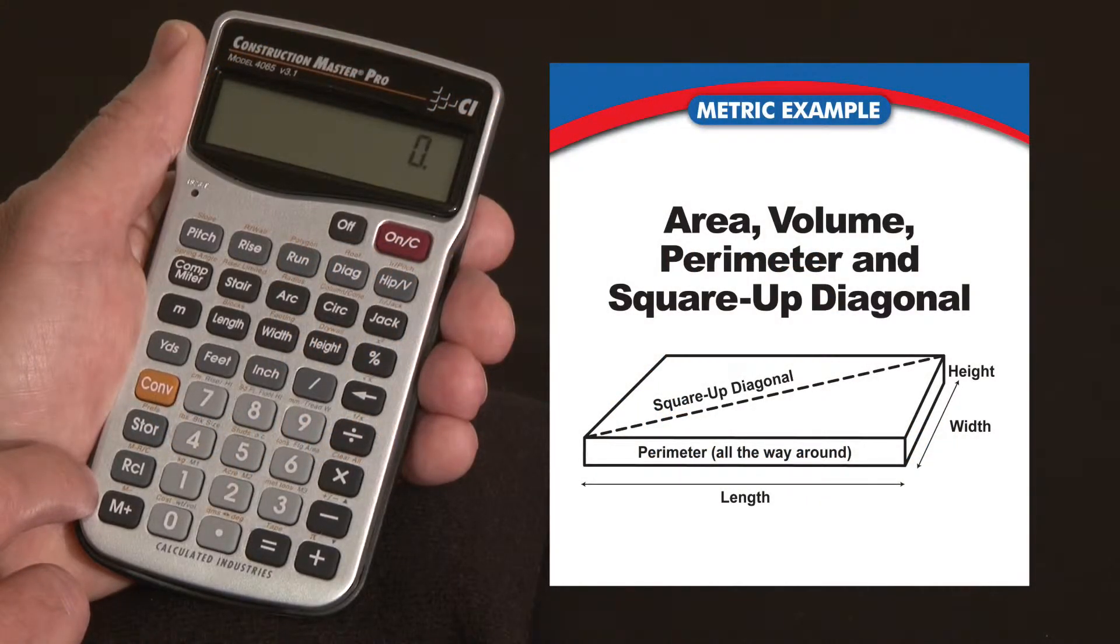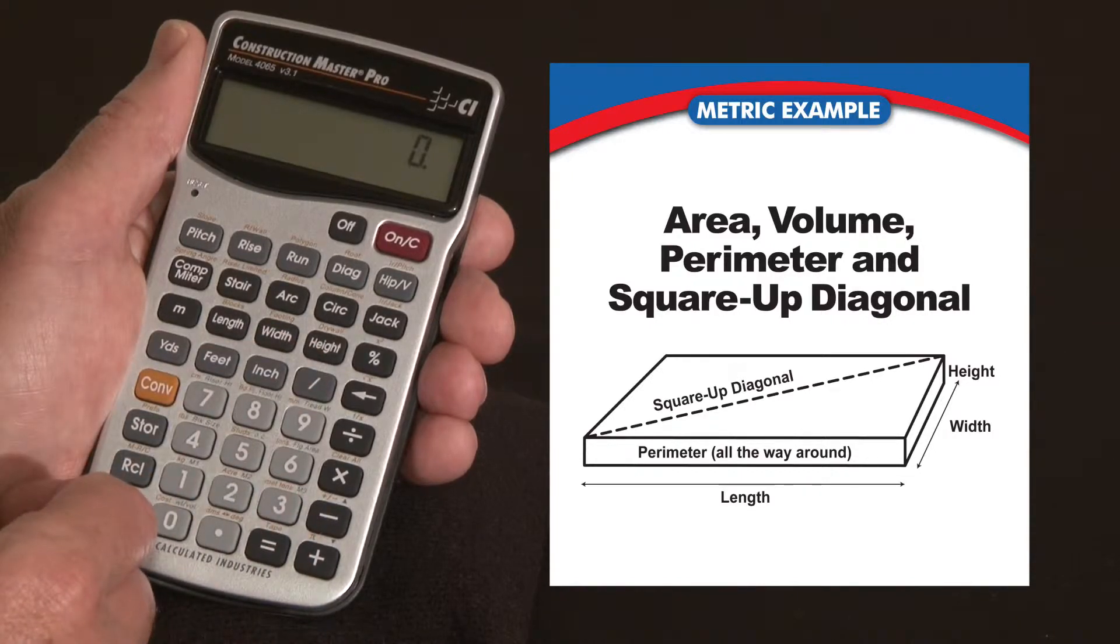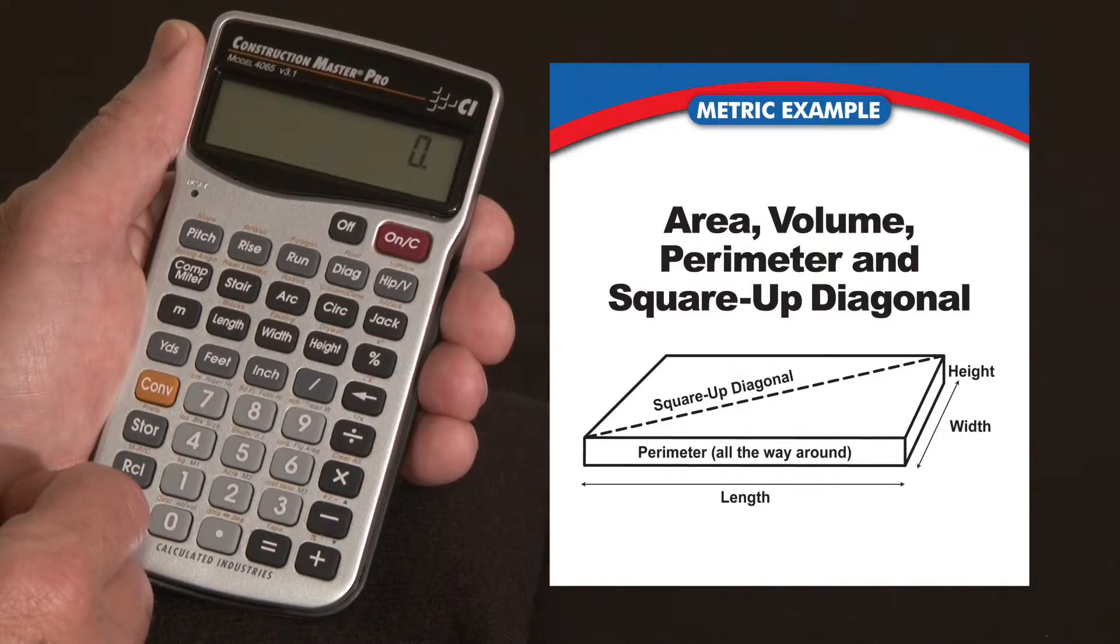Now let me show you how the Construction Master Pro's length, width, and height keys can give you areas, volumes, perimeters, and square-up diagonals and more just by entering the values in once.